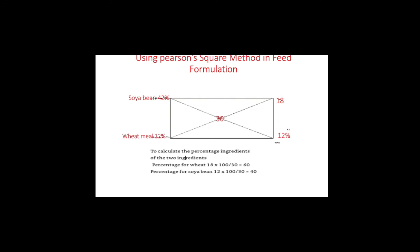We draw our square and place the desired protein level — which is 30% — at the center of the square. We group the ingredients into energy source and protein source: wheat meal as the energy source and soybean as the protein source. What we are going to do is subtract the difference between each ingredient's crude protein and the fish's crude protein of 30% at the center. We ignore the negative sign and sum the answers.